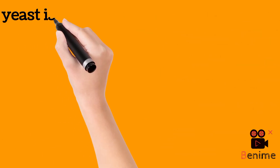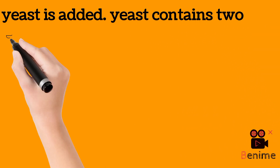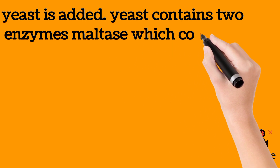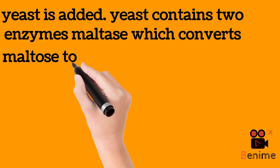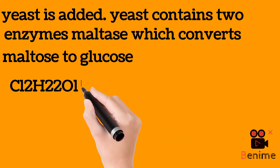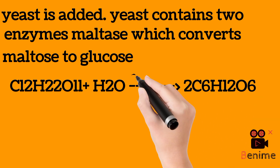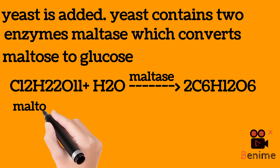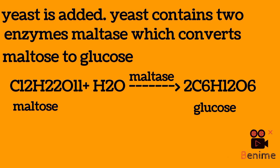At room temperature, yeast is then added. Yeast contains two enzymes. One is maltase, which converts maltose to glucose. The formula for maltose is C12H22O11. If we add water to maltose, it gives you glucose, which is C6H12O6. So we have maltose on the left and glucose produced on the right.